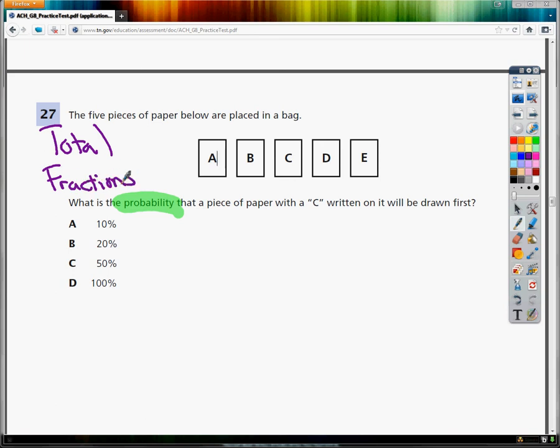And incidentally, I didn't mention it, but I also think multiply if I have more than one event. But I always think total first, fraction second. What is the probability that a piece of paper with a C written on it will be drawn first?